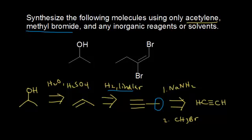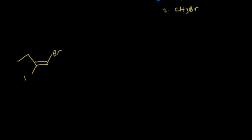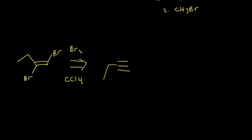We have time to do one more — let's do the synthesis of the molecule on the right. Looking at it, I have two bromines trans from each other, and that should immediately make you think about a reaction from the last video: halogenation will add these groups trans to an alkyne. So I can add bromine with carbon tetrachloride as the solvent, CCl4. What would that give us for our alkyne? We'd need an ethyl group on this side, and that would be the reaction.